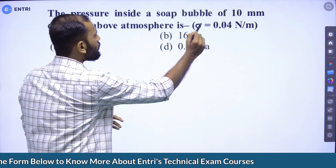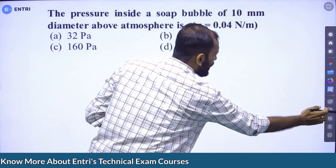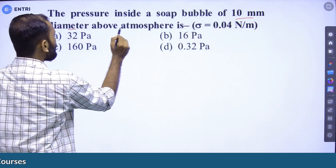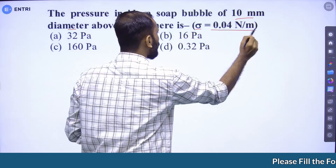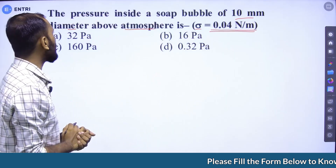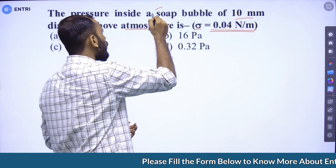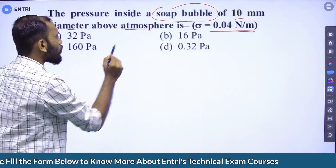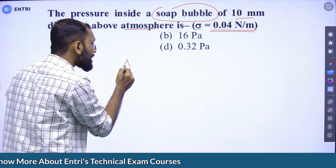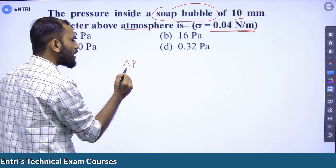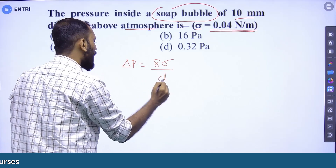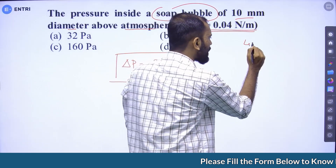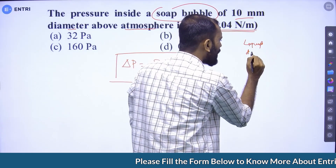Question number two: the pressure inside a soap bubble of 10 mm diameter above atmosphere is to be found. Given sigma = 0.04 Newton per meter. The pressure inside a hollow bubble is given by the equation: delta P = 8 sigma by D.